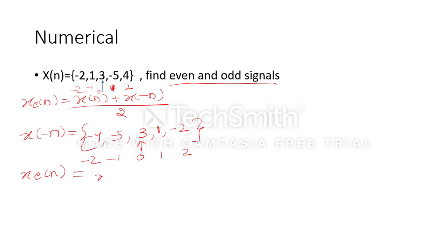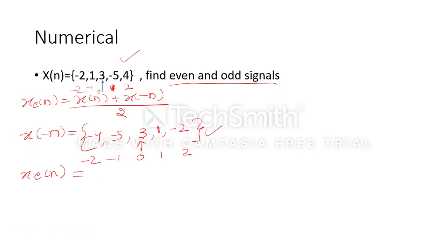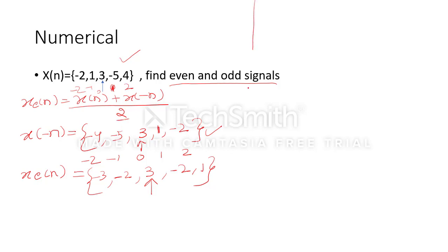Applying the even signal formula x_e[n] = [x[n] + x[-n]] / 2: at position 0, (3+3)/2 = 3; at position -1 and 1, (-5+1)/2 = -2; at position -2 and 2, (4-2)/2 = 1; at position -3 and 3, (1-5)/2 gives -3. This gives us the even component of the discrete signal.